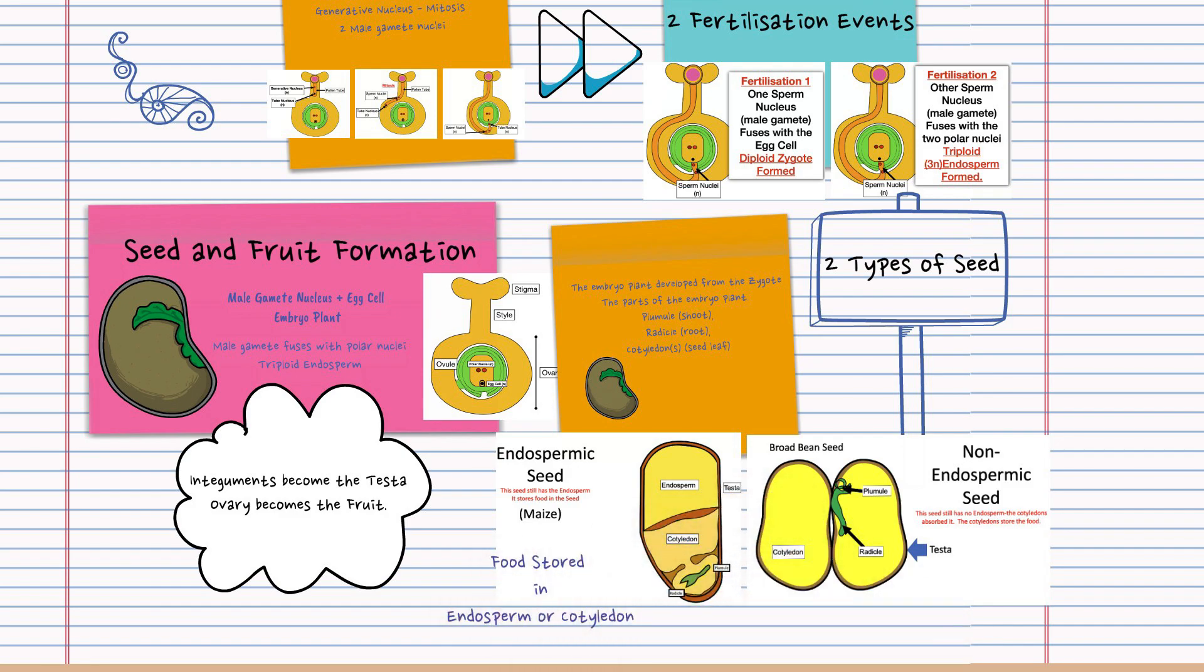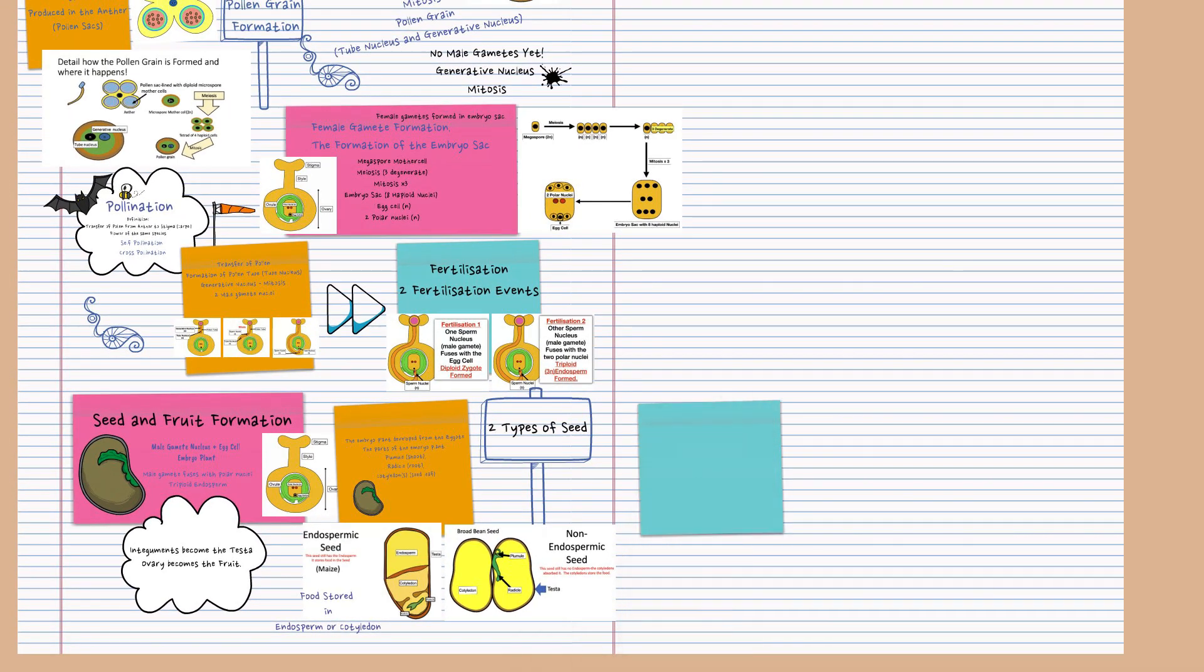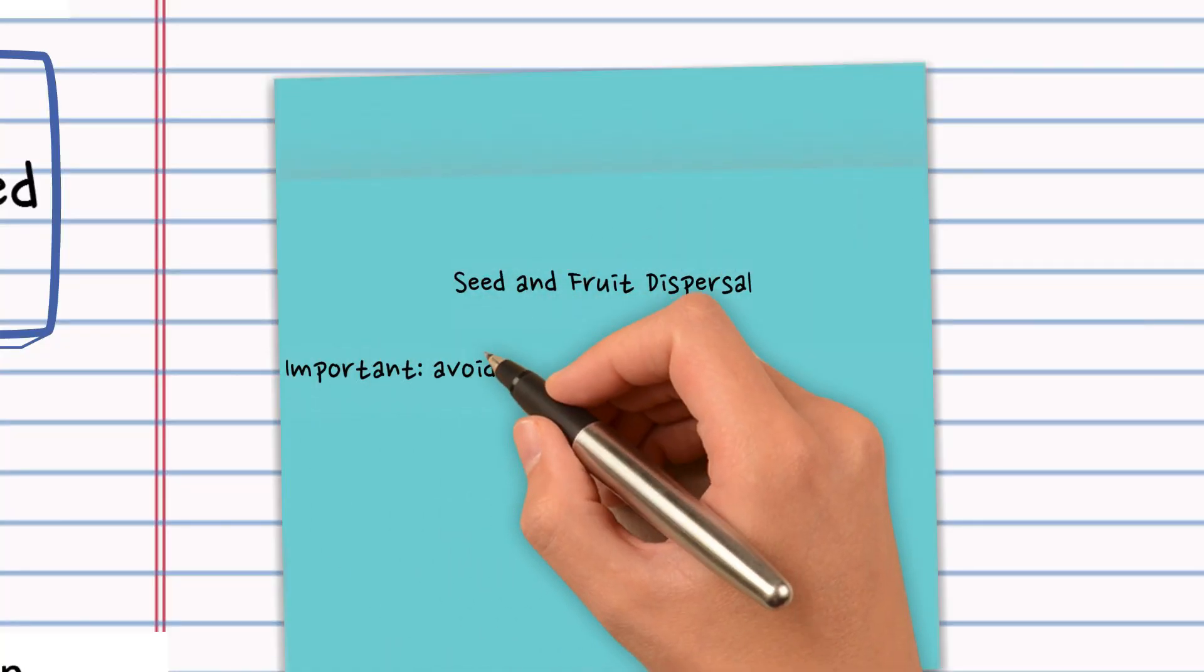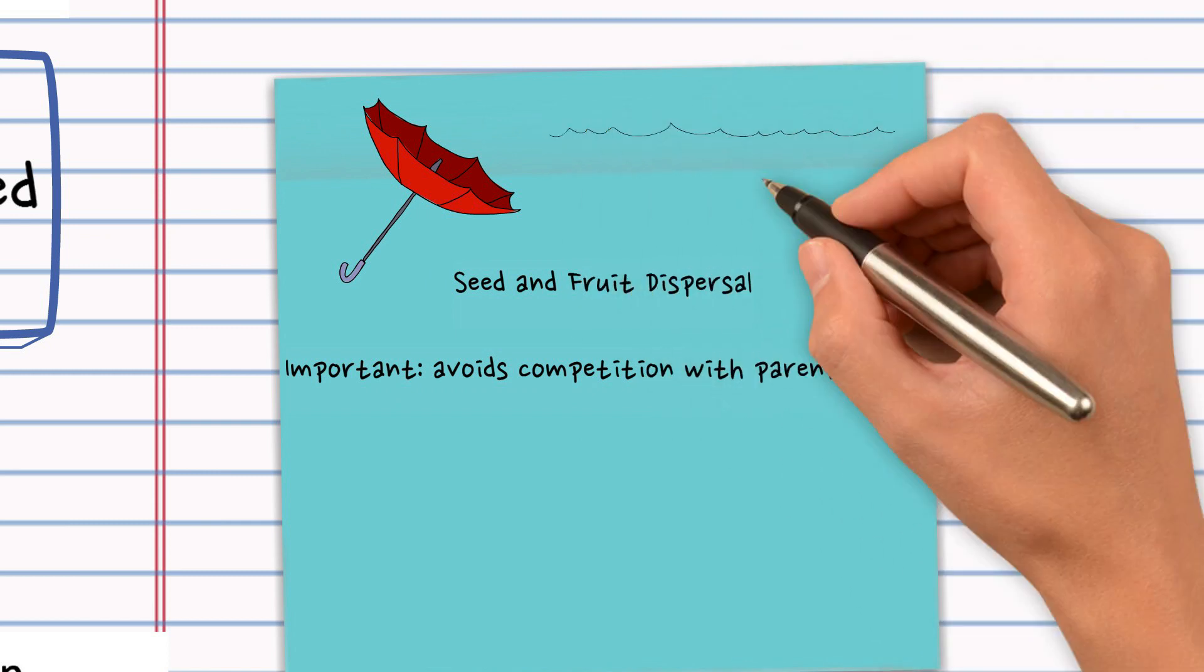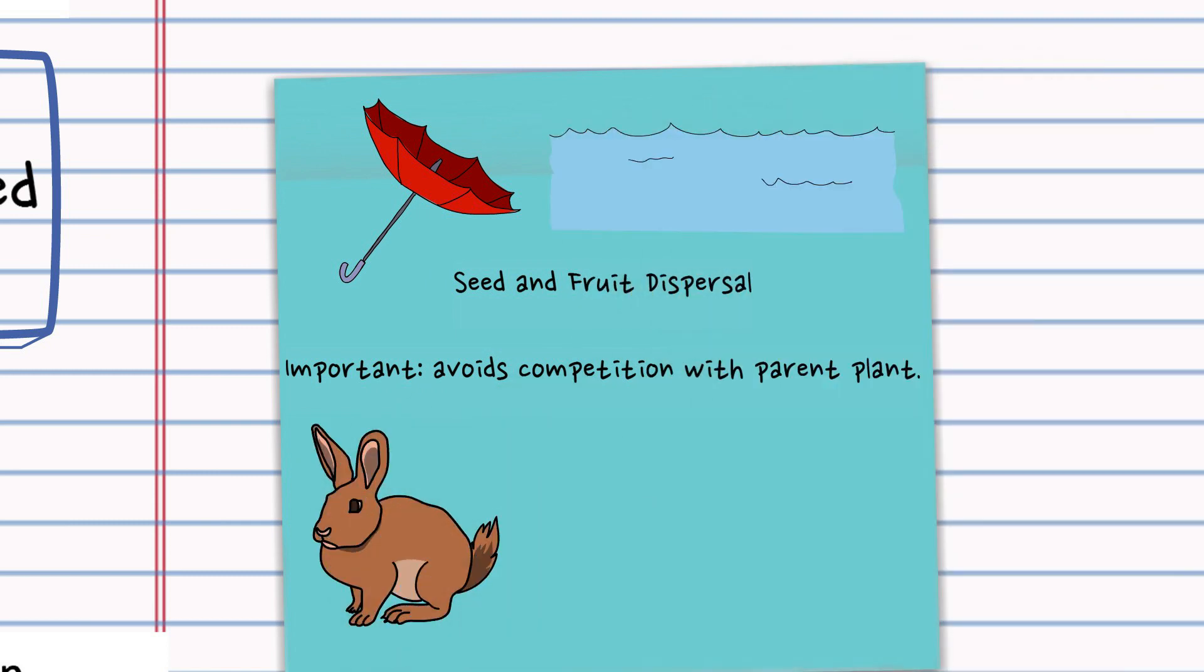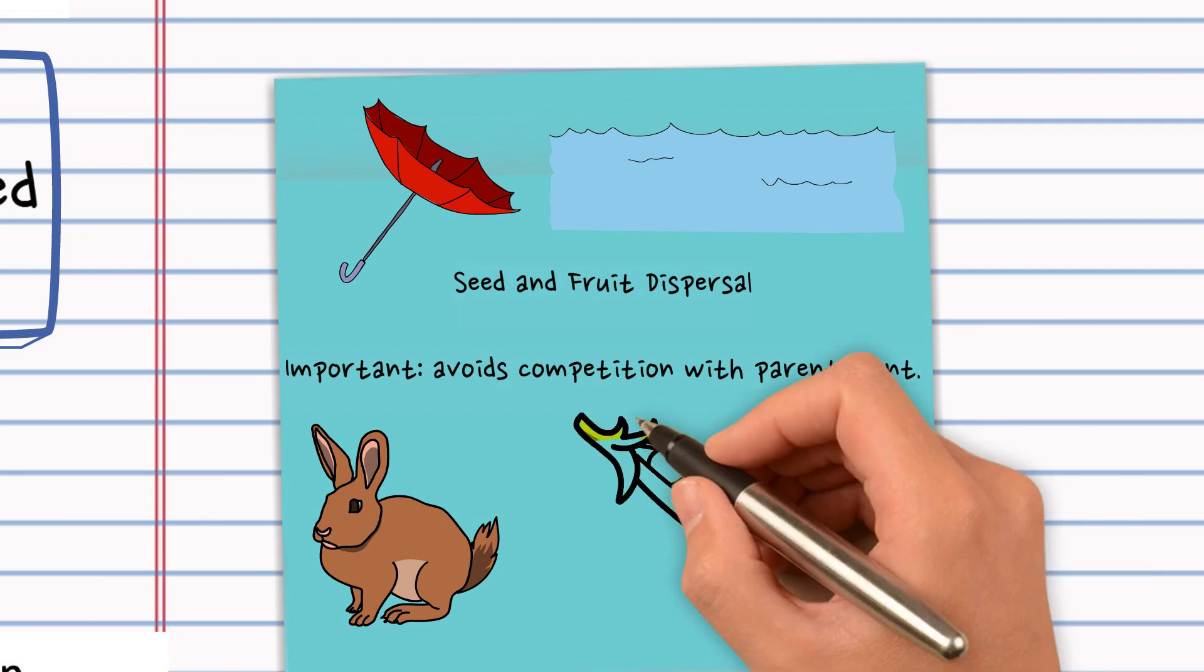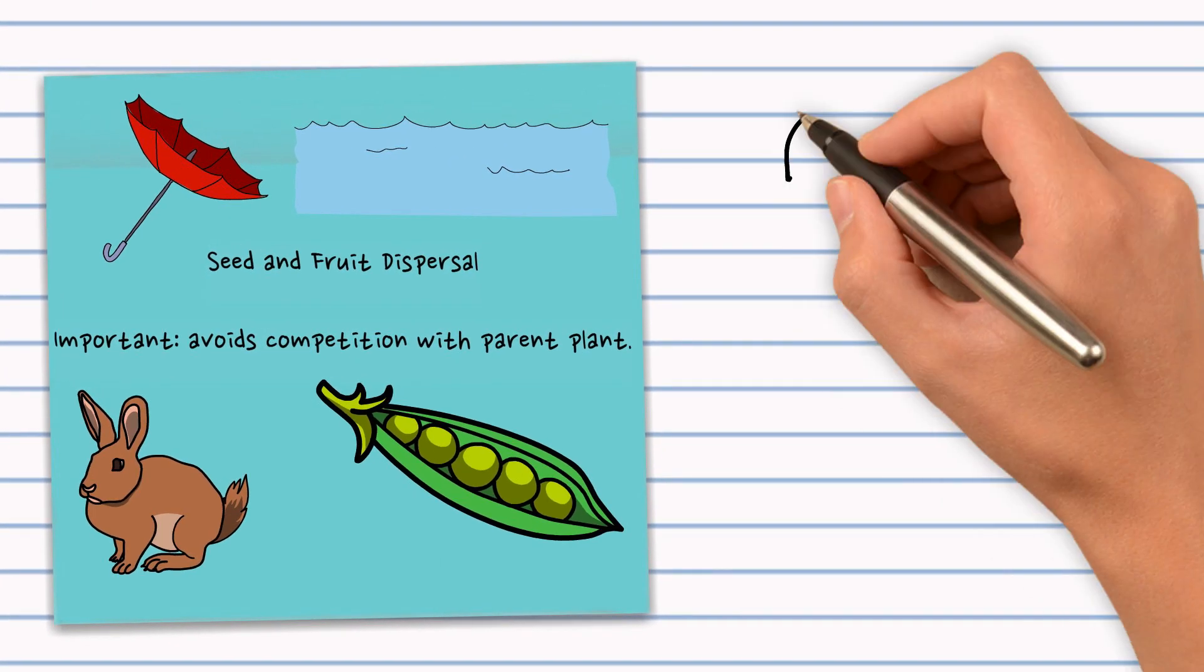So following on from this is seed and fruit dispersal. It's really important that the seed gets away from the parent plant to avoid competition. The wind can carry it or sometimes water can be one means like in coconuts. Also animals and also some plants can do it themselves like pea pods exploding.